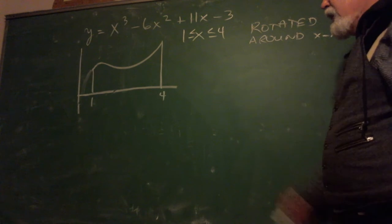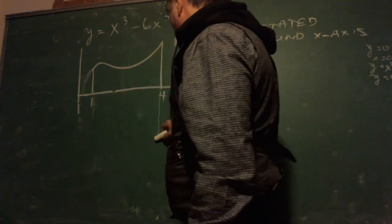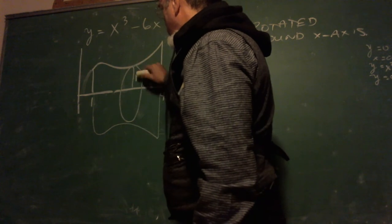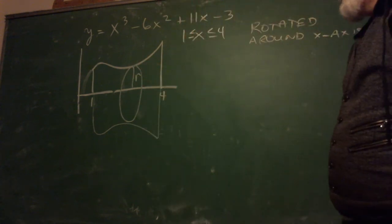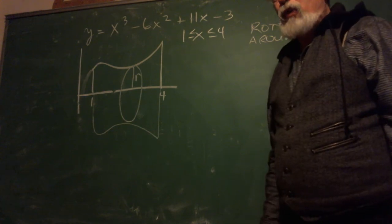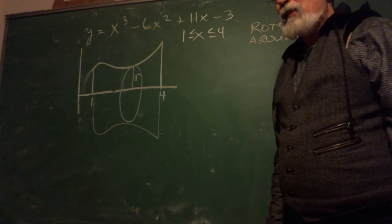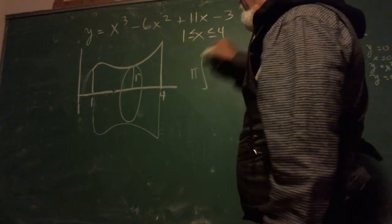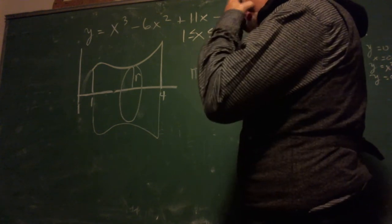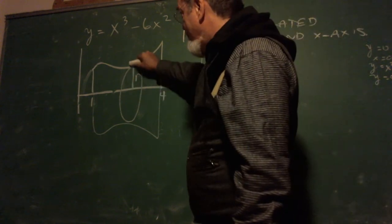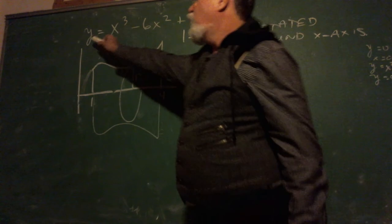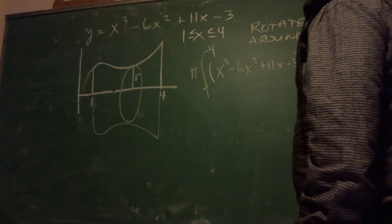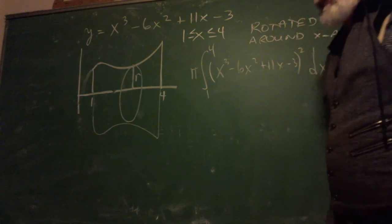You can graph this on your calculator. It's not exactly a butternut squash - sue me. I've got it flat on one end, flat on the other end, but I've got the little bumpy shape. It's only a cubic polynomial so the math might not be too bad. We're going to rotate this around the x-axis. The setup is pi integral from 1 to 4, and it's going to be r squared, and the r is this y equals x cubed minus 6x squared plus 11x minus 3 quantity squared dx.